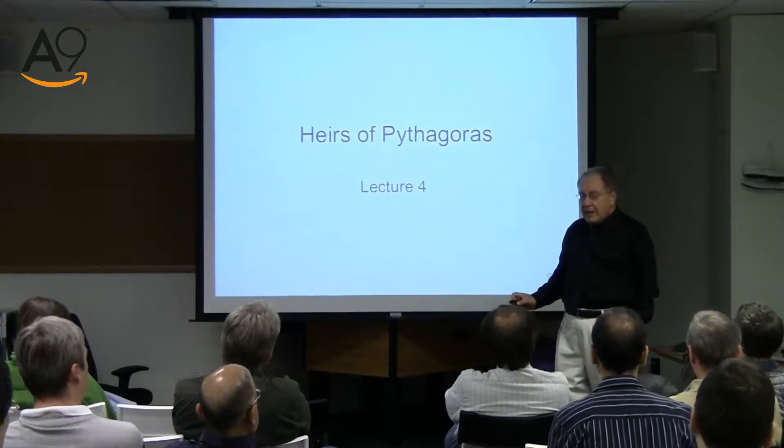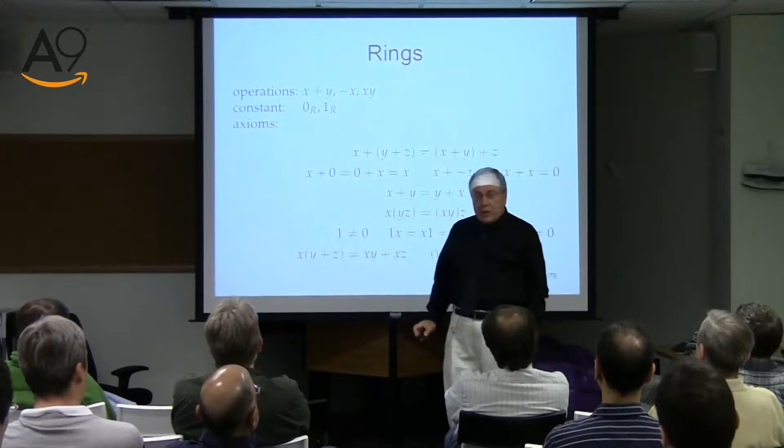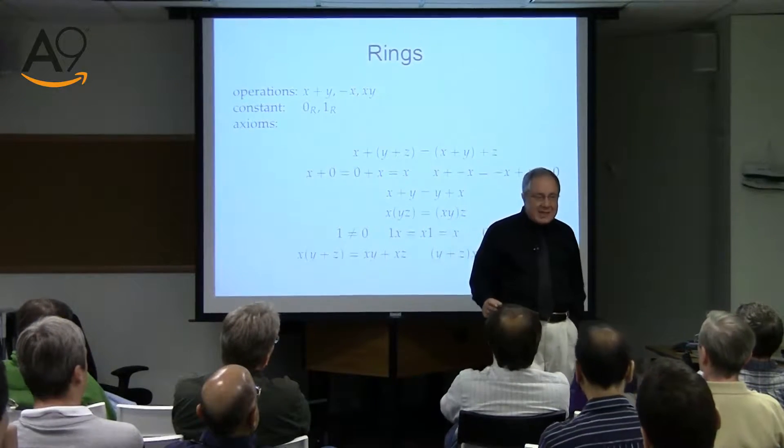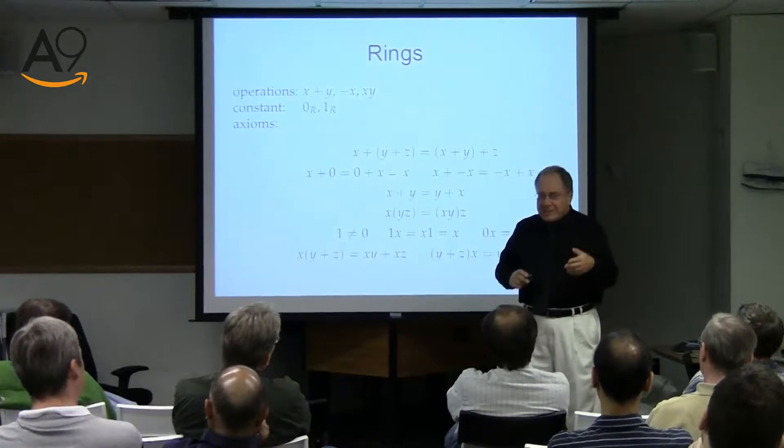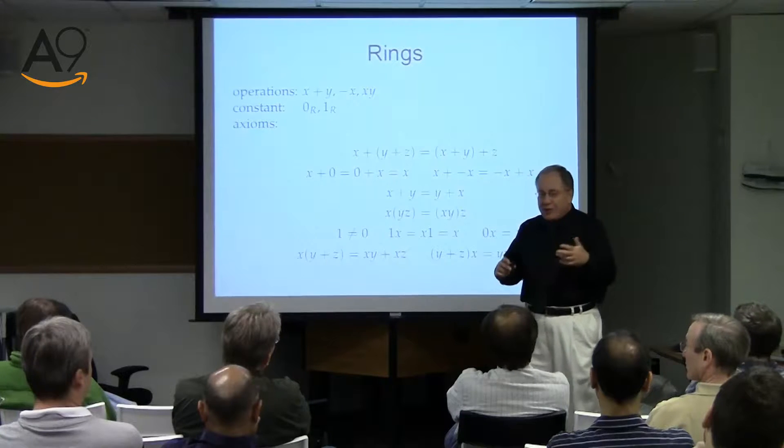But there are more algebraic structures than just groups. Groups is, in some sense, the beginning. There are simpler things like semi-groups, but they're much less interesting. The next algebraic structure is called a ring — and it's not named after a ring-shaped object, but apparently after a criminal ring, a bunch of people. Mathematicians started running out of words; 'set' was taken, 'group' was taken, so they used 'ring.' Hilbert was apparently the first one to use it.